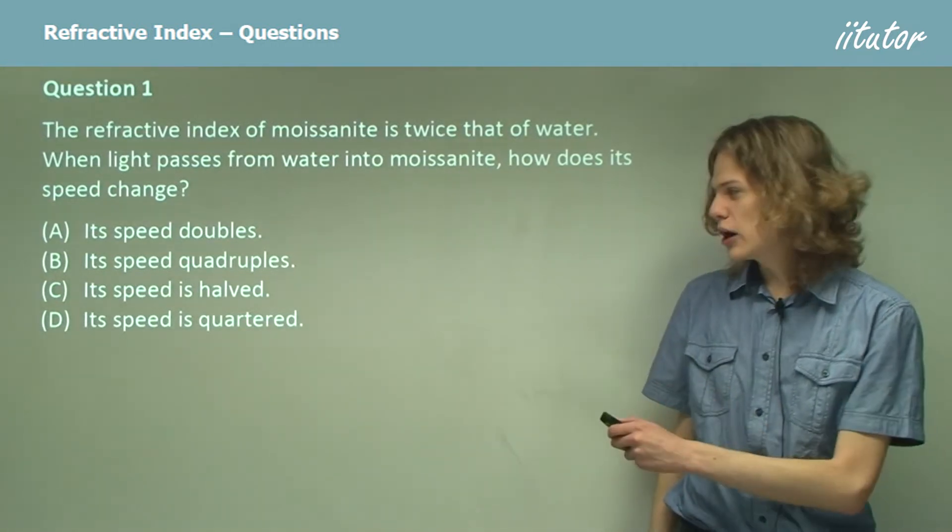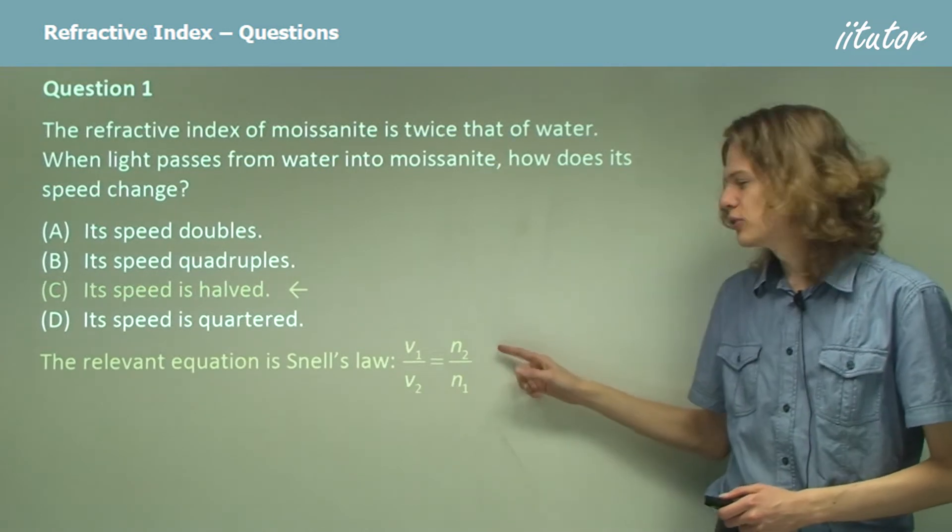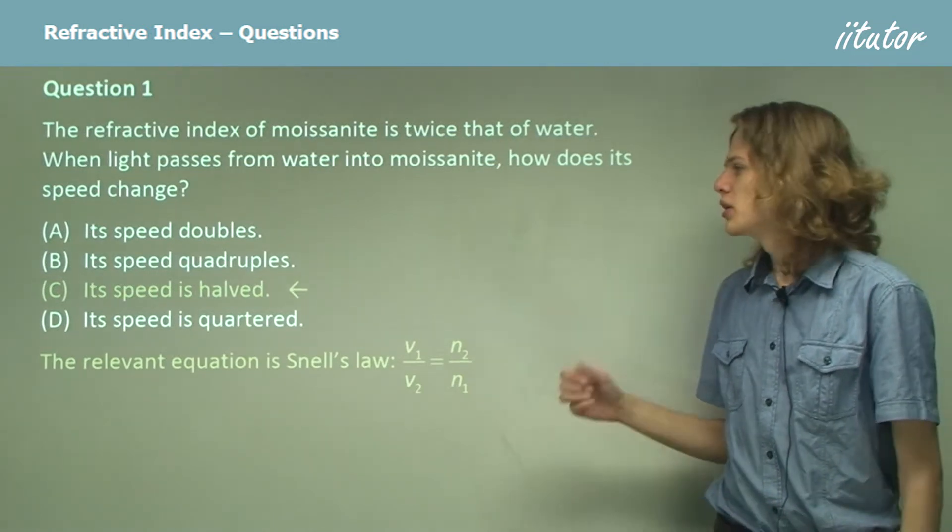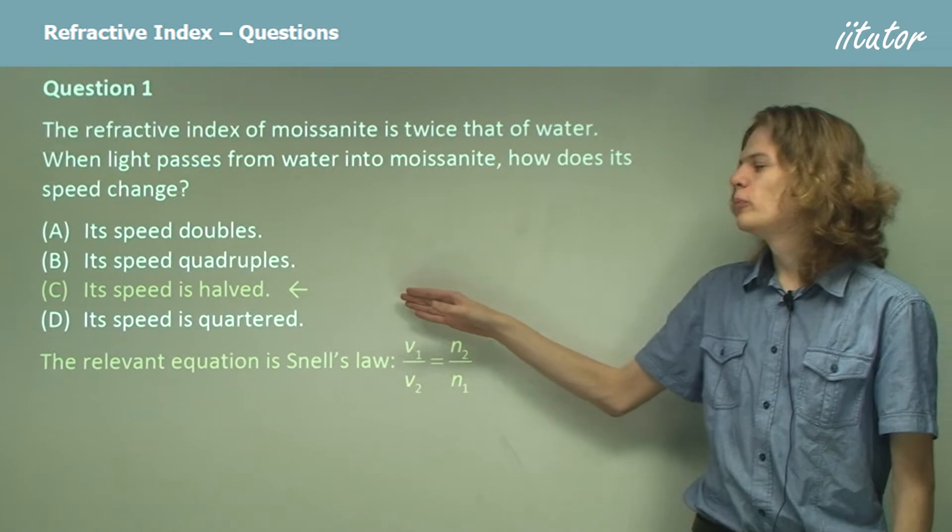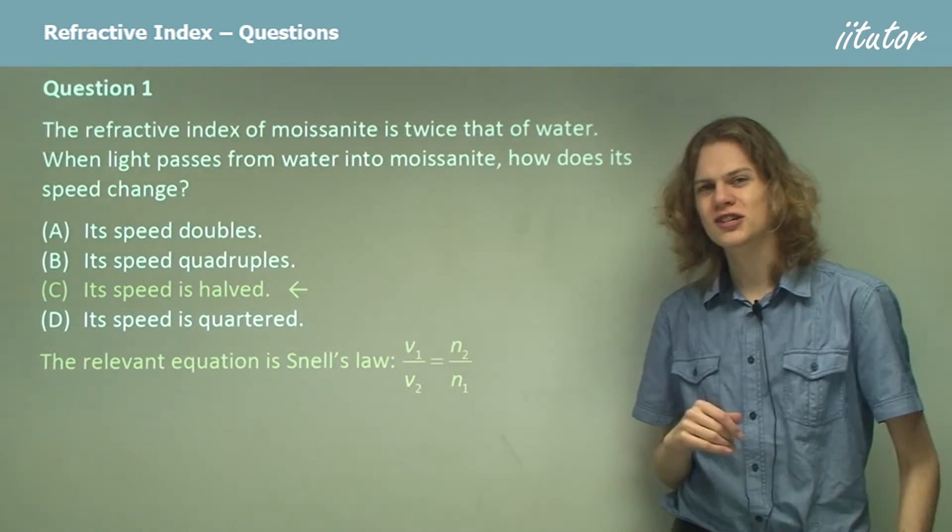In fact, looking at the equation V1 over V2 equals N2 over N1, we can see quite easily that the speed will be halved. There aren't any squares or anything in this equation.